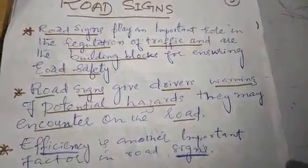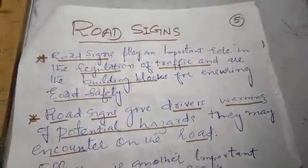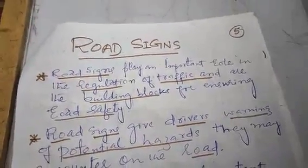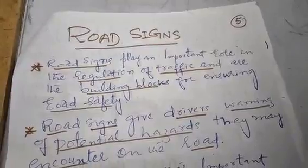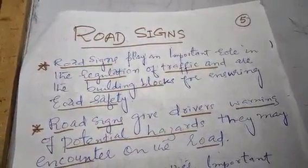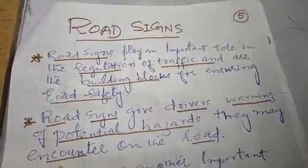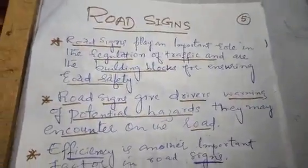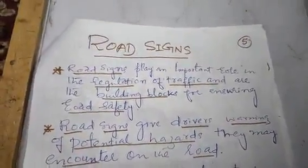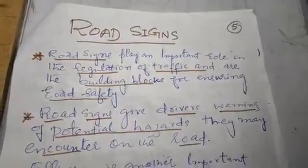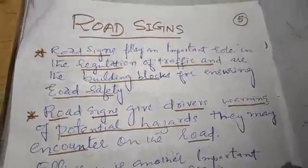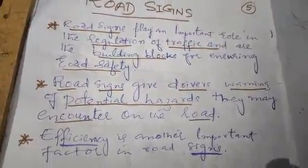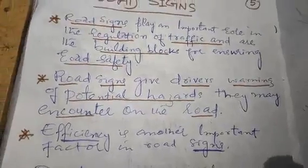Road signs on roads are a warning for drivers that if they drive incorrectly, accidents or dangers can occur. Signs prepare the motorist for what they will encounter around each corner — they tell a motorcyclist or driver what challenges or bends are coming ahead.